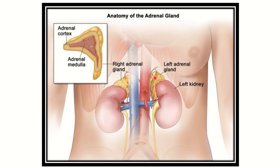The right adrenal gland is also related to the inferior vena cava. We can see the hilum, and the adrenal gland lies more superiorly, above the hilum. The structures passing through the hilum — such as the renal vein, renal artery, and pelvis or ureter — are not directly related to the right adrenal gland.